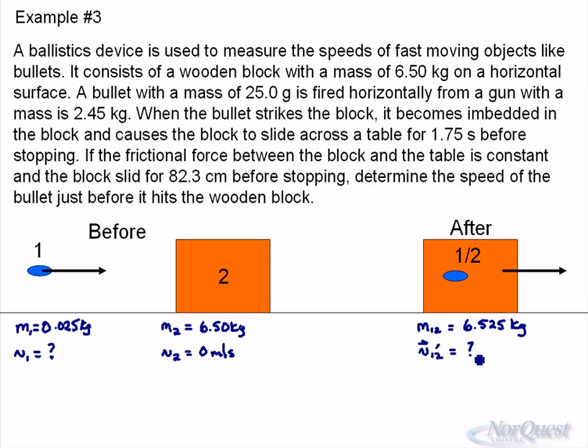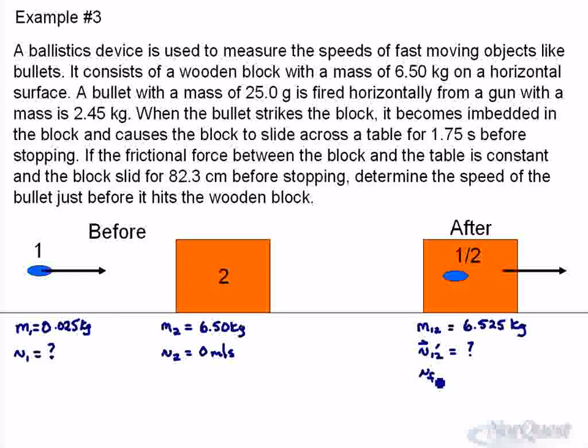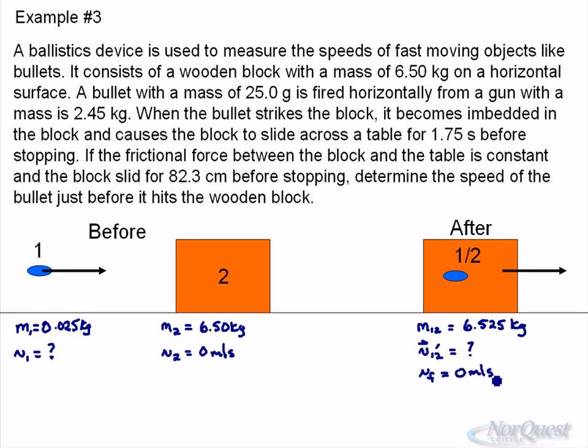We have a problem here. I have two unknowns, which means I need some other information to figure out one of these unknowns. This is where all the kinematic stuff comes in. We know it becomes embedded and slides for a time, coming to a final speed of 0 meters per second in a time of 1.75 seconds. And it slides a distance of 82.3 centimeters.